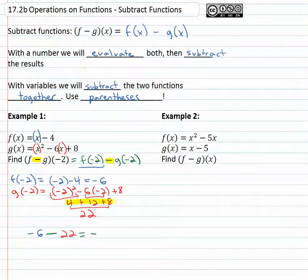Quick check: 4 + 12 + 8 equals 24. So −6 − 24—sorry about that adjustment—equals −30, and I like that answer better.